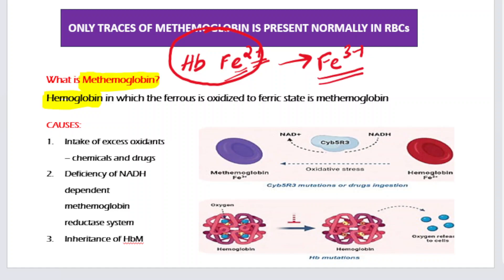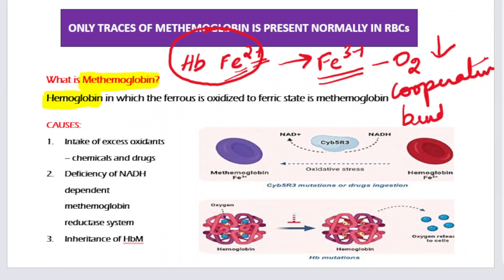The significance of this is that normally hemoglobin has oxygen-carrying capacity only in the ferrous state. When it is oxidized to the ferric state, the oxygen-binding capacity is reduced, and the cooperative binding is also reduced. So oxygen-carrying capacity and cooperative binding are both lost when you have methemoglobin.